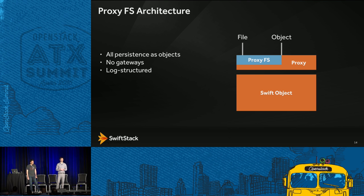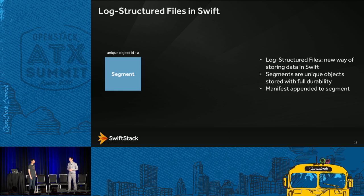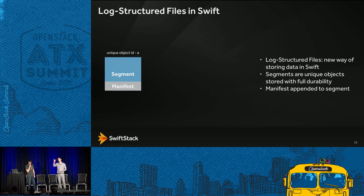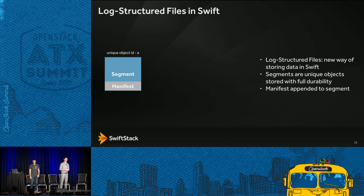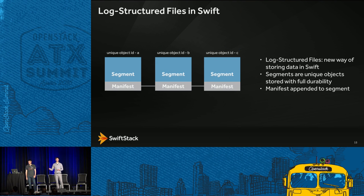This read-your-creates capability allows us to build a log-structured data format inside of Swift. There's a new component called ProxyFS that sits alongside the proxy services, and the persistence of that file access is done as objects into the Swift object tier — so there are no gateways. A segment of data comes in; that's a new way of storing data. Each segment is accompanied by a manifest at the tail containing a map of that particular file. Additional segments are connected together via those manifests into a whole object.